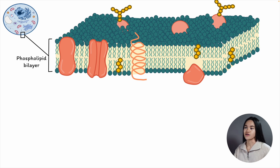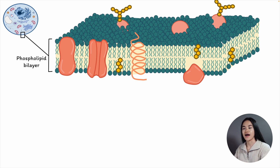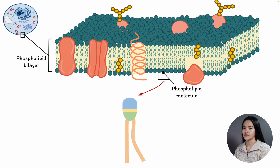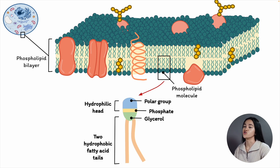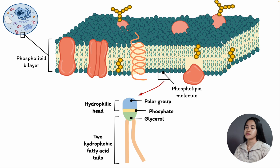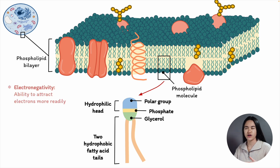Compounds classed as lipids are hydrophobic, or water-fearing, which means they do not mix well with water. Cells are filled with and surrounded by water, so the structure of the cell membrane is determined by the way membrane lipids react in an aqueous environment. In cell membranes, the lipids are phospholipids, which have a hydrophilic polar head containing a phosphate group and two hydrophobic, non-polar hydrocarbon tails. Sometimes small polar molecules are also linked to the phosphate groups, such as choline. Polar simply means there is an electronegativity difference between the bonded atoms — electronegativity is the ability of an atom to attract electrons more readily.